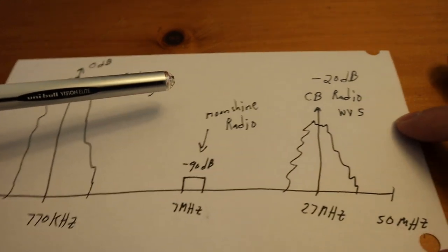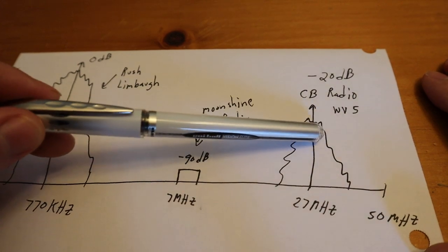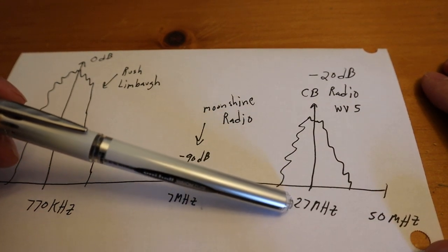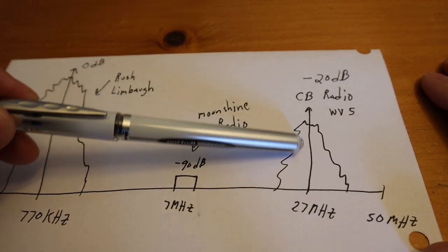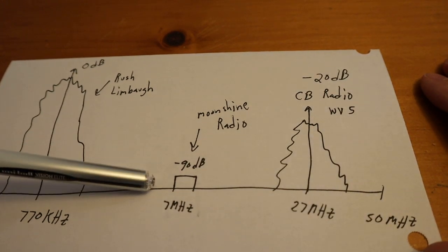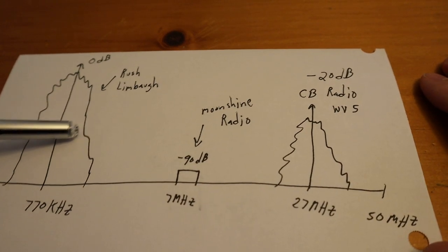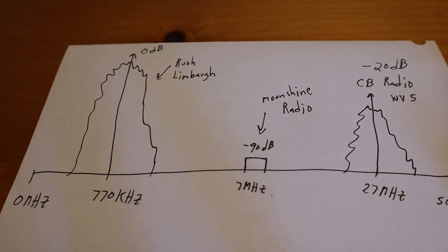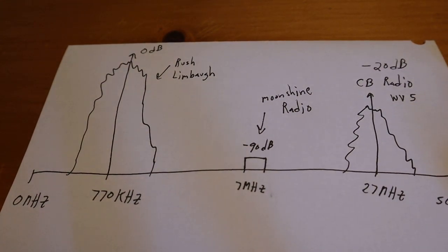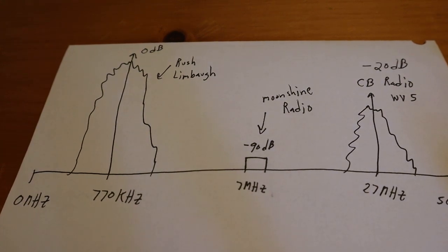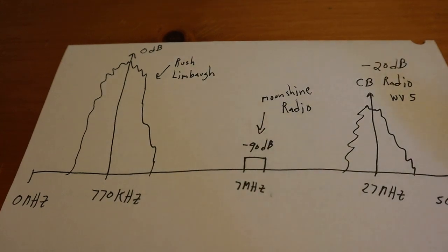And you also live down the road from West Virginia 5, and he's transmitting on CB radio at about 5,000 watts. So he's also coming down your wire antenna full strength. So your little Moonshine radio is getting buried by these two big boys here. So what you gonna do? You take your radio back and say, this is a piece of shit, I can't even tune in my Moonshine radio.